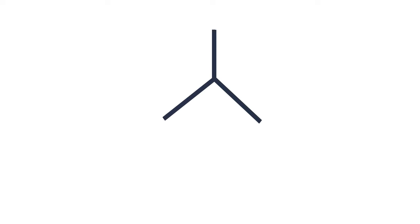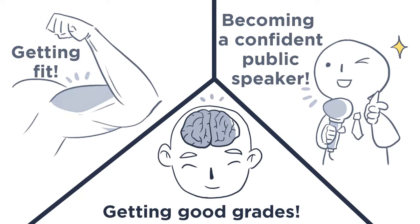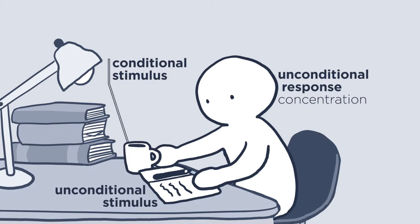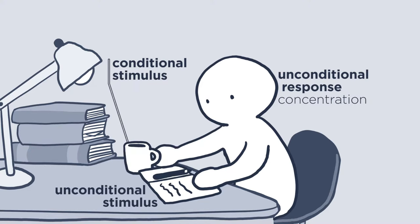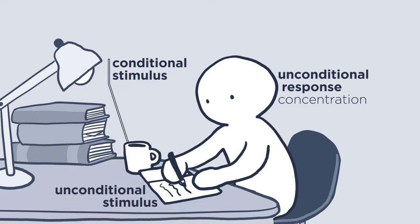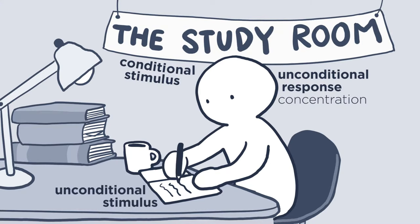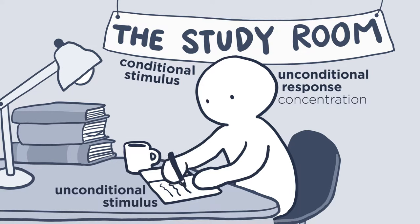You can use a similar classical conditioning technique to improve your studying habits. Every time you study, drink a peppermint tea — and while you're drinking, just study, no distractions. Only take a break once you finish the tea. Over time, you'll associate peppermint tea with focusing, so that all you need to do to focus is drink some tea. You might also have heard the tip of having a specific place where you consistently study, so that simply going to that location triggers focus.